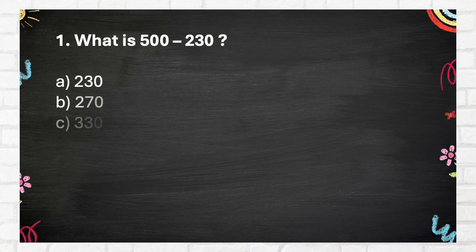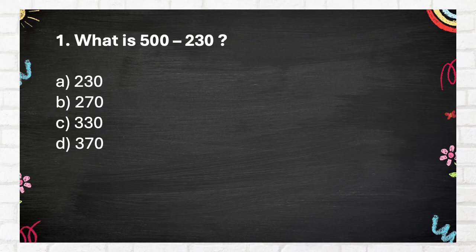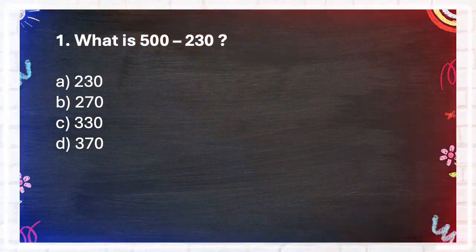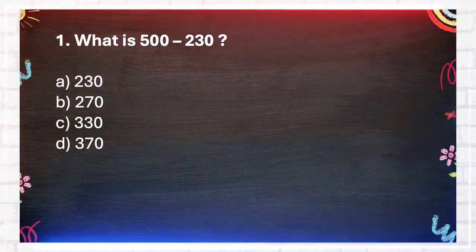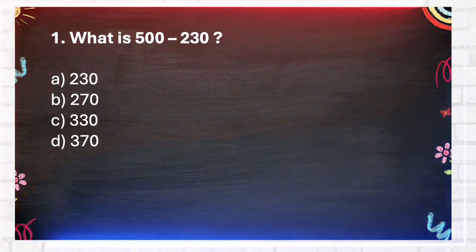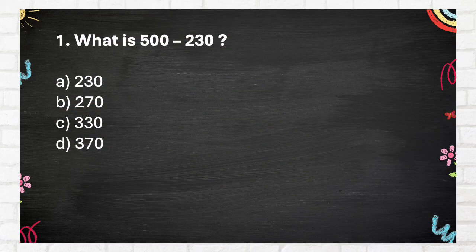Question number 1. What is 500 minus 230? Again, what is 500 minus 230? A. 230. B. 270. C. 330. D. 370. The answer is B. 270.